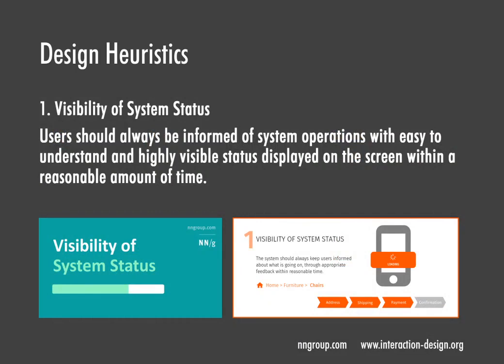Visibility of system status: users should always be informed of system operations with easy-to-understand and highly visible status displayed on screen within a reasonable amount of time. Examples include a download or installation progress bar, steps remaining in a checkout process for buying shoes or furniture, or whether a page is still loading or has stopped. Let the users know — we are frustrated and too busy to wait.